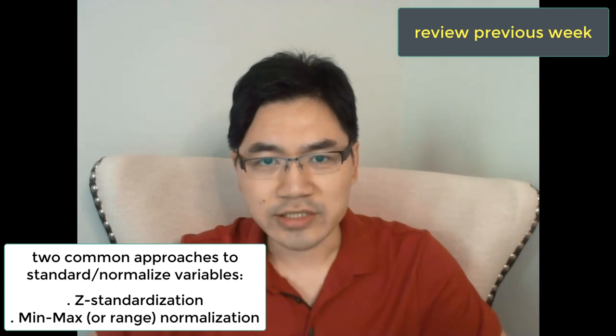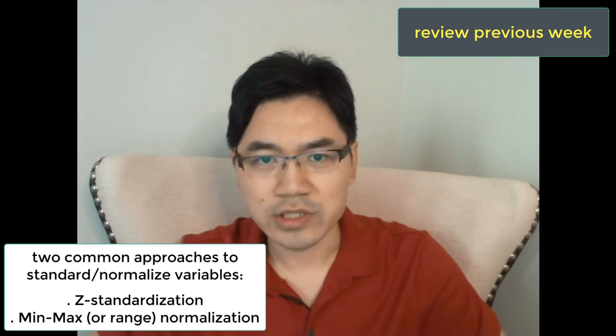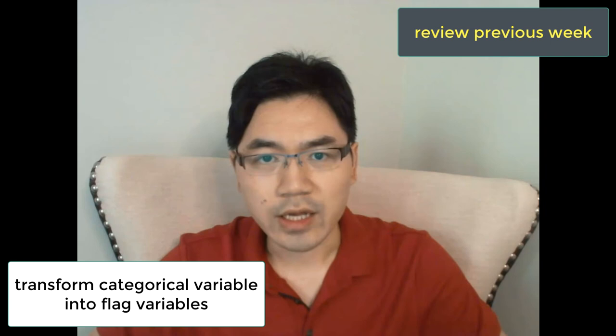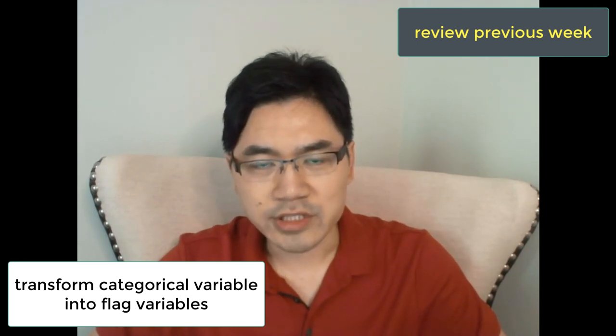In the previous week, I also talked about data transformation. Among the topics, I specifically talked about standardizing the scales of variables. There are two commonly used approaches: one is z-score standardization and the other is min-max or range normalization. Think about how they are similar and how they are different. I also talked about how categorical variables are not ready for being directly used in data mining without data transformation — so what is the best approach to pre-process categorical variables in order to include them in data mining?